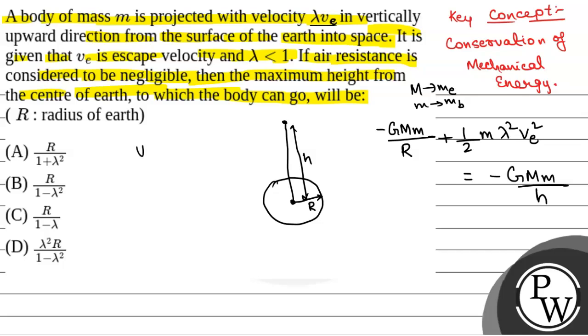Now V_e square is equal to 2GM by R because escape velocity. So we will have minus GMm by R plus half lambda square into 2GMm by R. That will be equal to minus GMm by h.